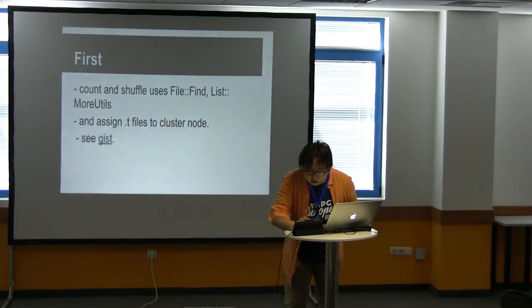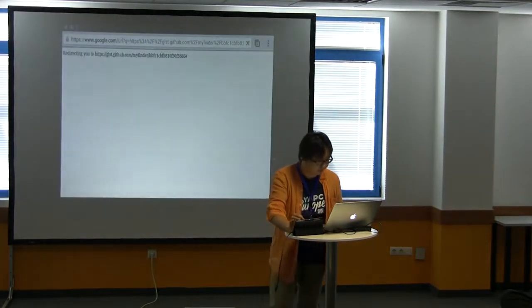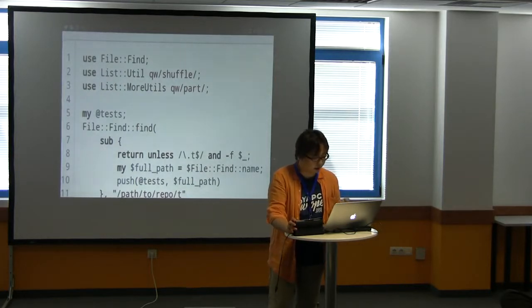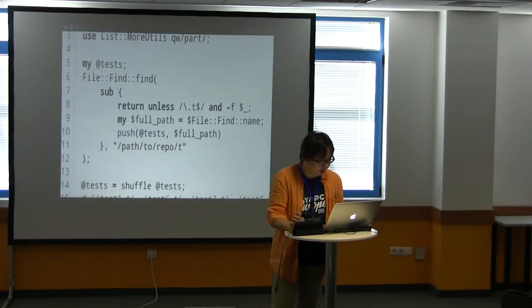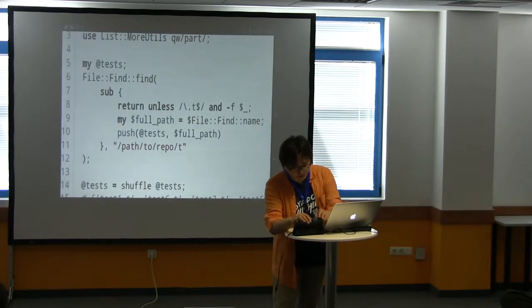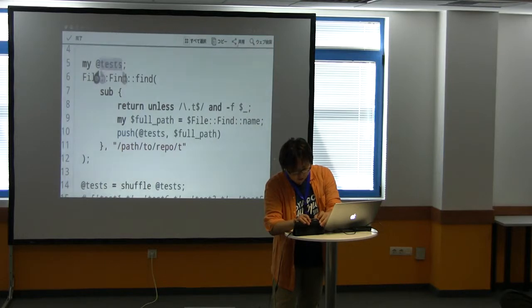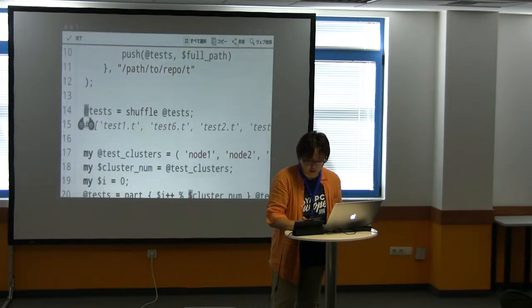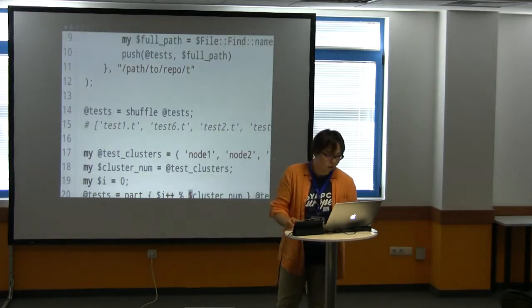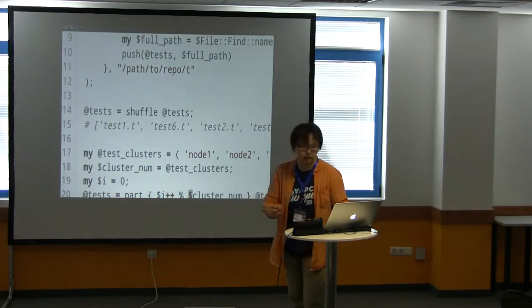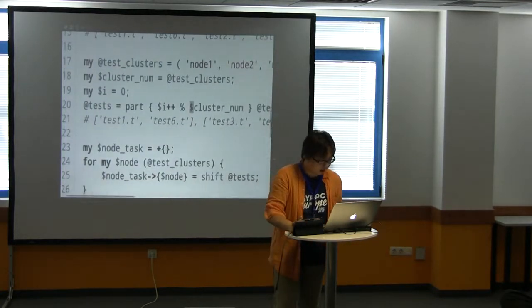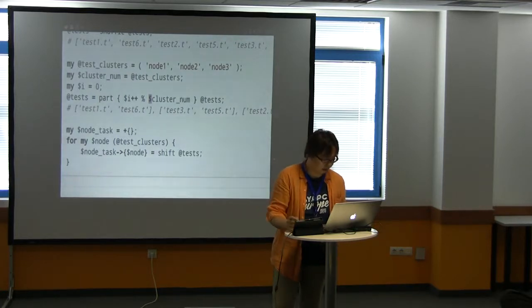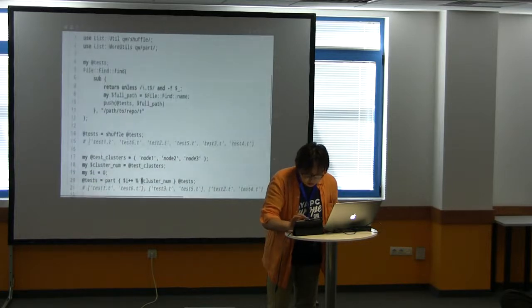The first is a sample code. It is very simple. Use File::Find and List::Util. First, traverse test file directory and push to file list and iterate test file list array. Next, shuffle test cases here to avoid test order dependency, shuffle test list. Next, test files partitioned by number of test cluster servers and assign to cluster node. It is very simple.